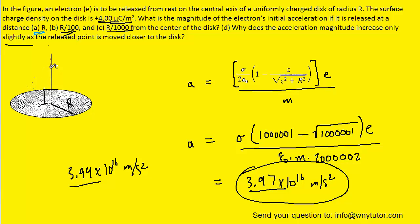Consider placing the electron at its current location and looking at the charges on the outer rim of the disk. All of those positive charges exert attractive forces on the electron, pulling it towards the disk, resulting in a net downward pull on the electron overall.